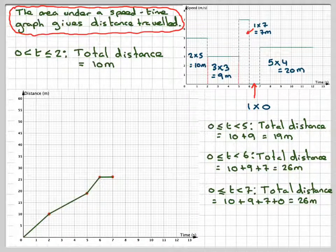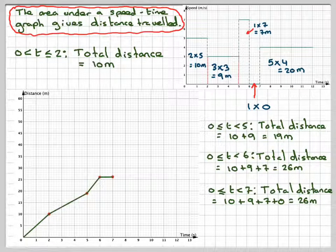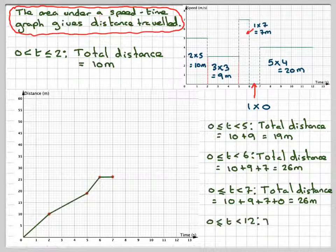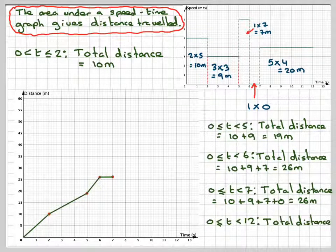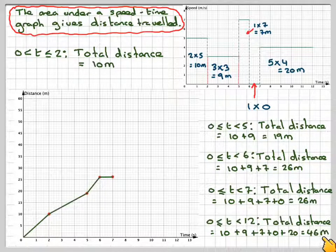For the final part, we're going to go 5 times 4, which is 20 metres. Therefore, the total distance travelled will be 26 plus 20, which gives 46 metres.